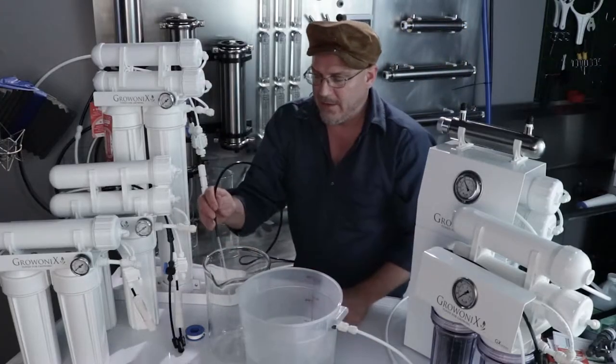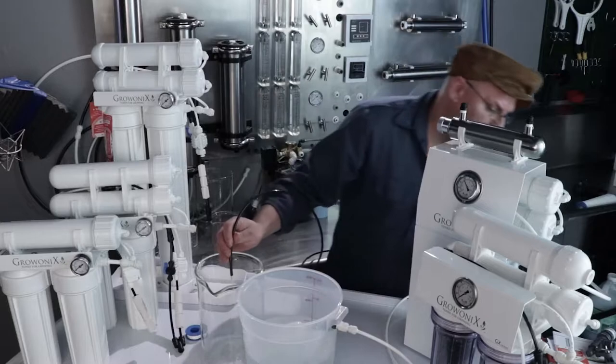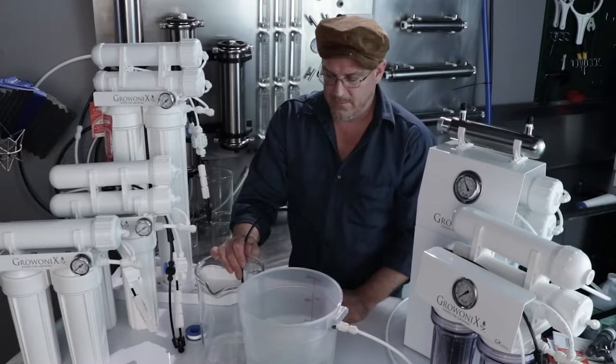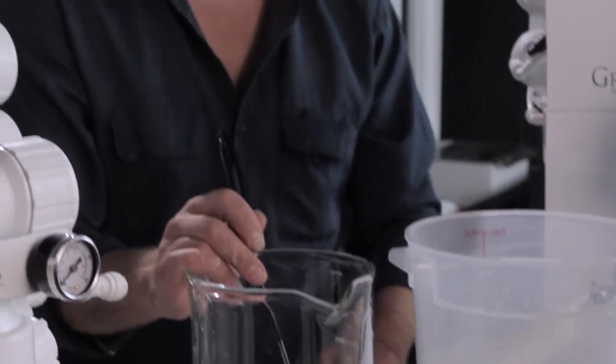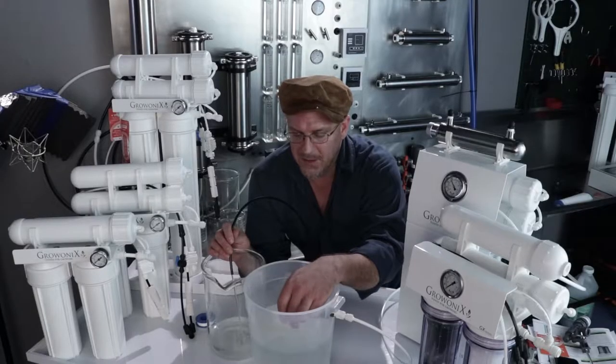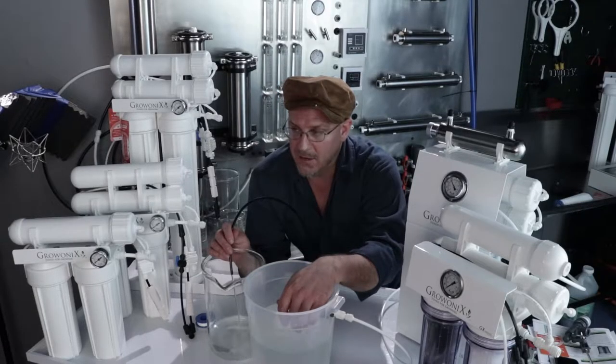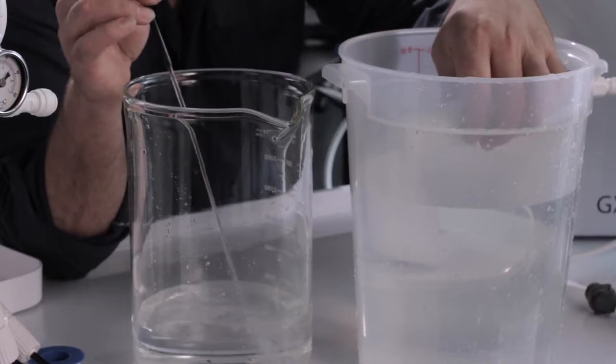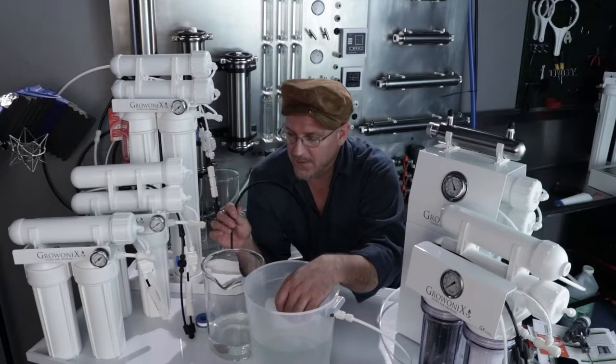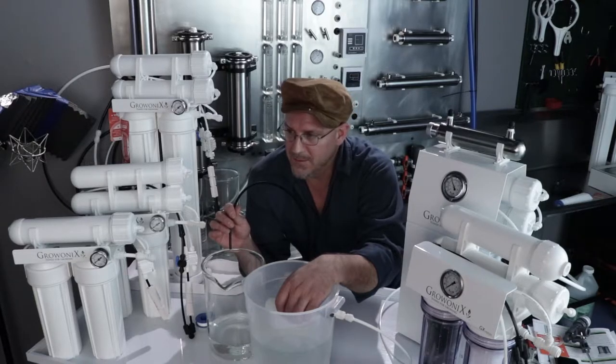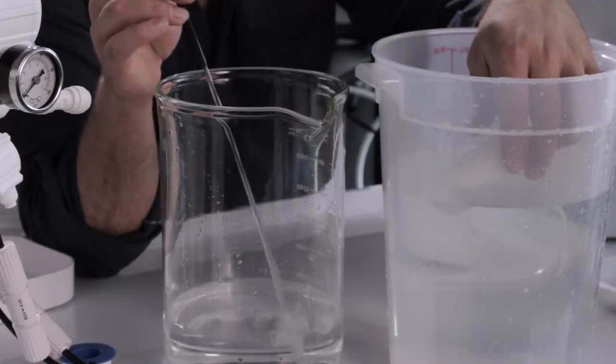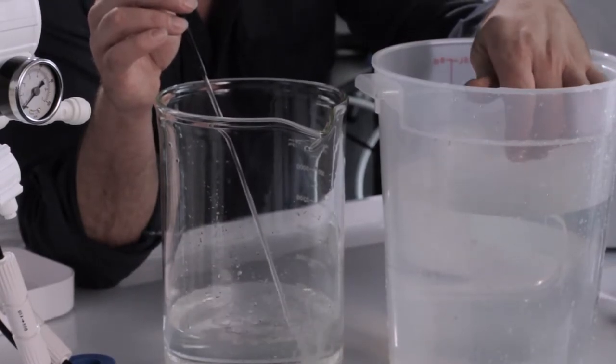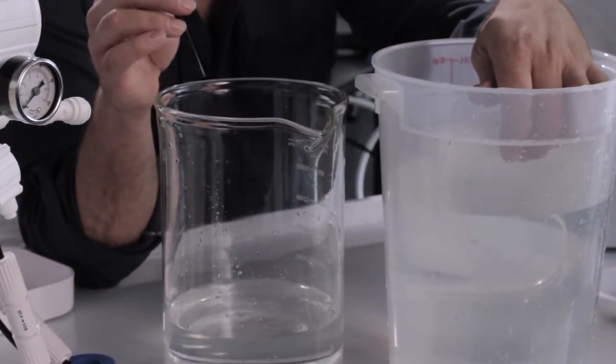Now I'm going to grab the drain line of the GX 400, which is right here. I'm going to show you how the float valve and the auto shutoff valve work in conjunction with each other. If I artificially manipulate this valve and pick it up, closing off the permeate stream, the drain water is going to shut off. And if I lower the valve, reducing the pressure in the permeate line, the auto shutoff valve is going to open up again, and the drain water will flow. So valve up, valve down.